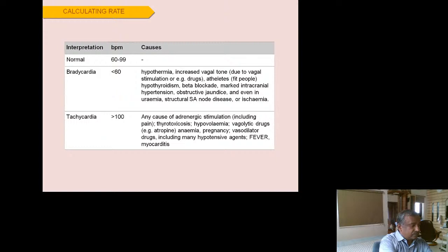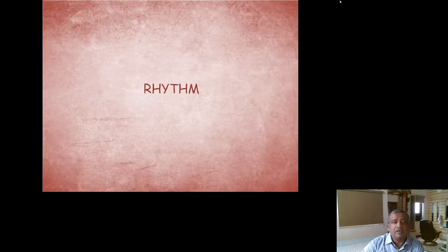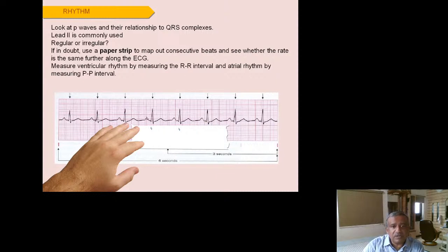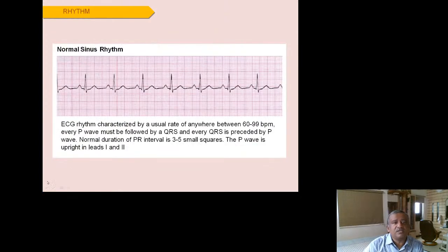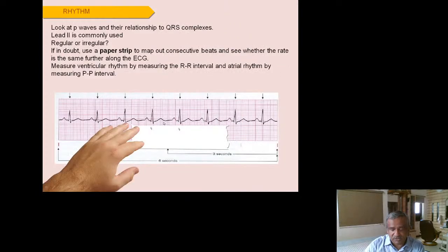To assess rhythm, take a plain paper strip, mark consecutive P waves, and move the strip along the ECG tracing to see whether each marking falls on another P wave. Do the same for QRS complexes. This helps determine whether the rhythm is regular or irregular. A normal sinus rhythm shows regularly occurring P waves and regularly occurring QRS complexes confirmed by this paper strip method.